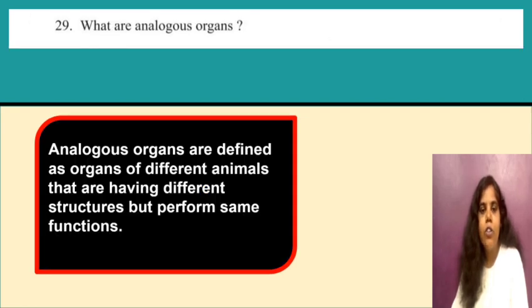Question on analogous organs: analogous organs are defined as organs of different animals that have different structures but perform the same function.